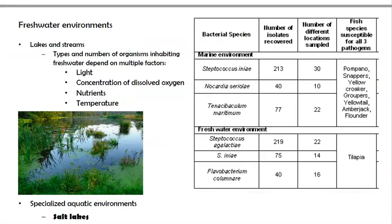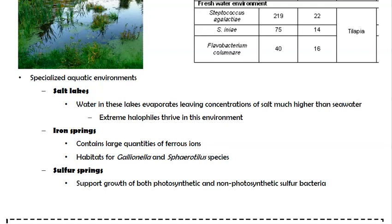In lakes and streams, the types and numbers of organisms depend on light, dissolved oxygen concentration, nutrients, and water temperature. Unique aquatic environments include the Great Salt Lakes, where evaporation leaves very high salt concentrations, supporting extreme halophiles. Iron springs contain large quantities of ferrous ions and are habitats for Gallionella species. Sulfur springs support the growth of both photosynthetic and non-photosynthetic sulfur bacteria.